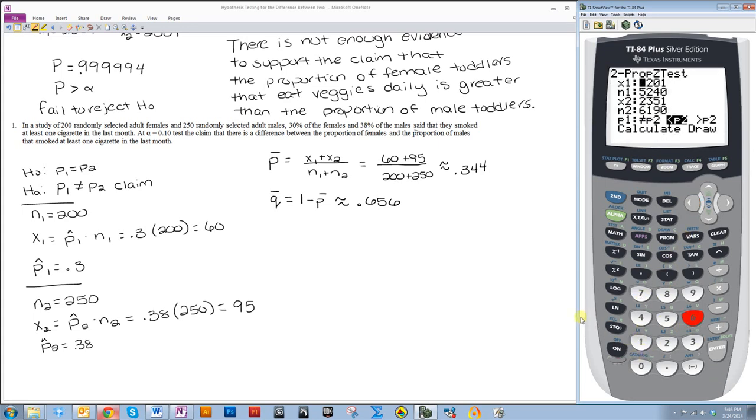Now I'm just going to fill in my numbers here. So x1 was 60, n1 is 200. Now whenever you're given a problem like this where you're given p-hat instead of x, it does ask for x, but you can also just stick it in the calculator like this. You could just do p-hat times n and it will go ahead and give you the x1. x2 is 95 and n2 is 250. And the alternative hypothesis is not equal to, so I need to make sure I highlight that. And then I go down, press calculate.